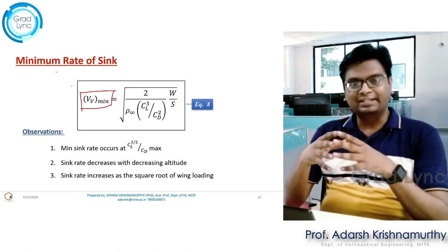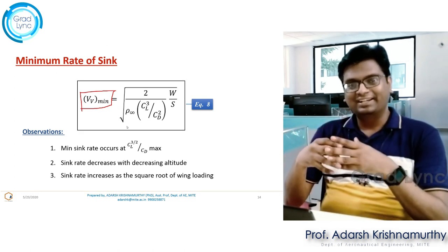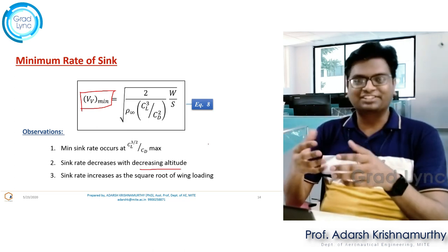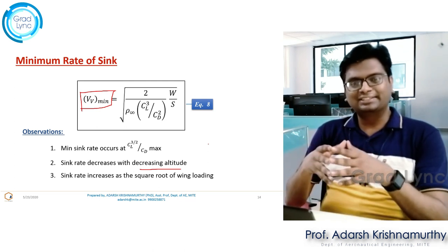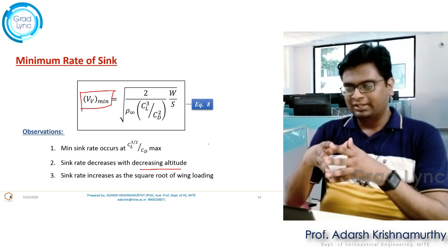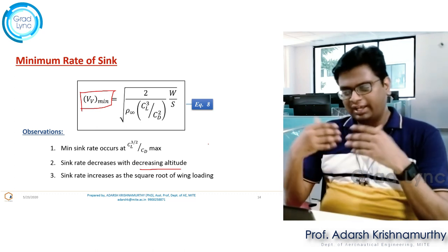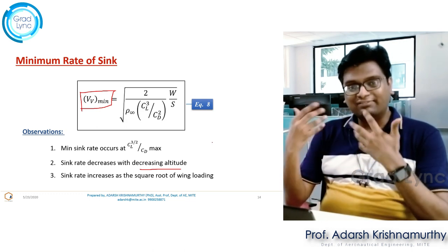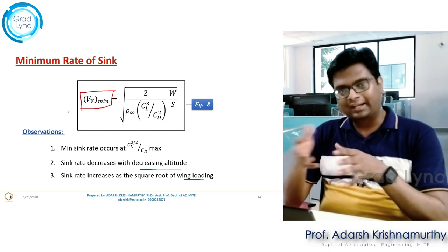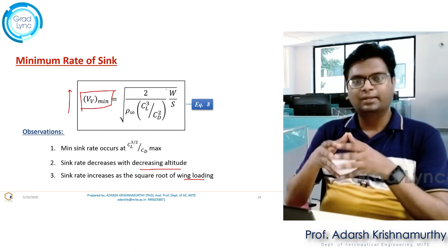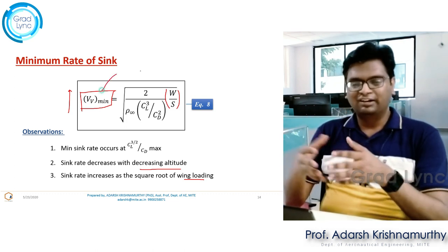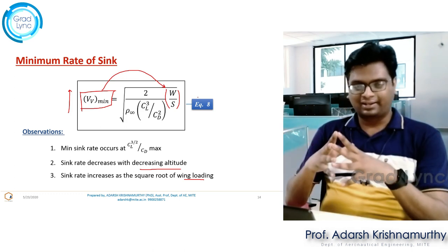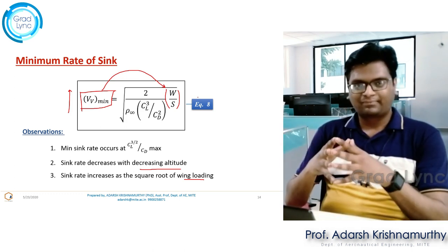The sink rate also decreases with decrease in altitude. The vertical component of velocity, as we observed in the previous class, decreases in magnitude with decrease in altitude. If the wing loading is high, the sink rate will also be more, because it is directly proportional. The sink rate is directly proportional to wing loading, which means, in simple words, the bigger the aircraft, the higher will be the sink rate.